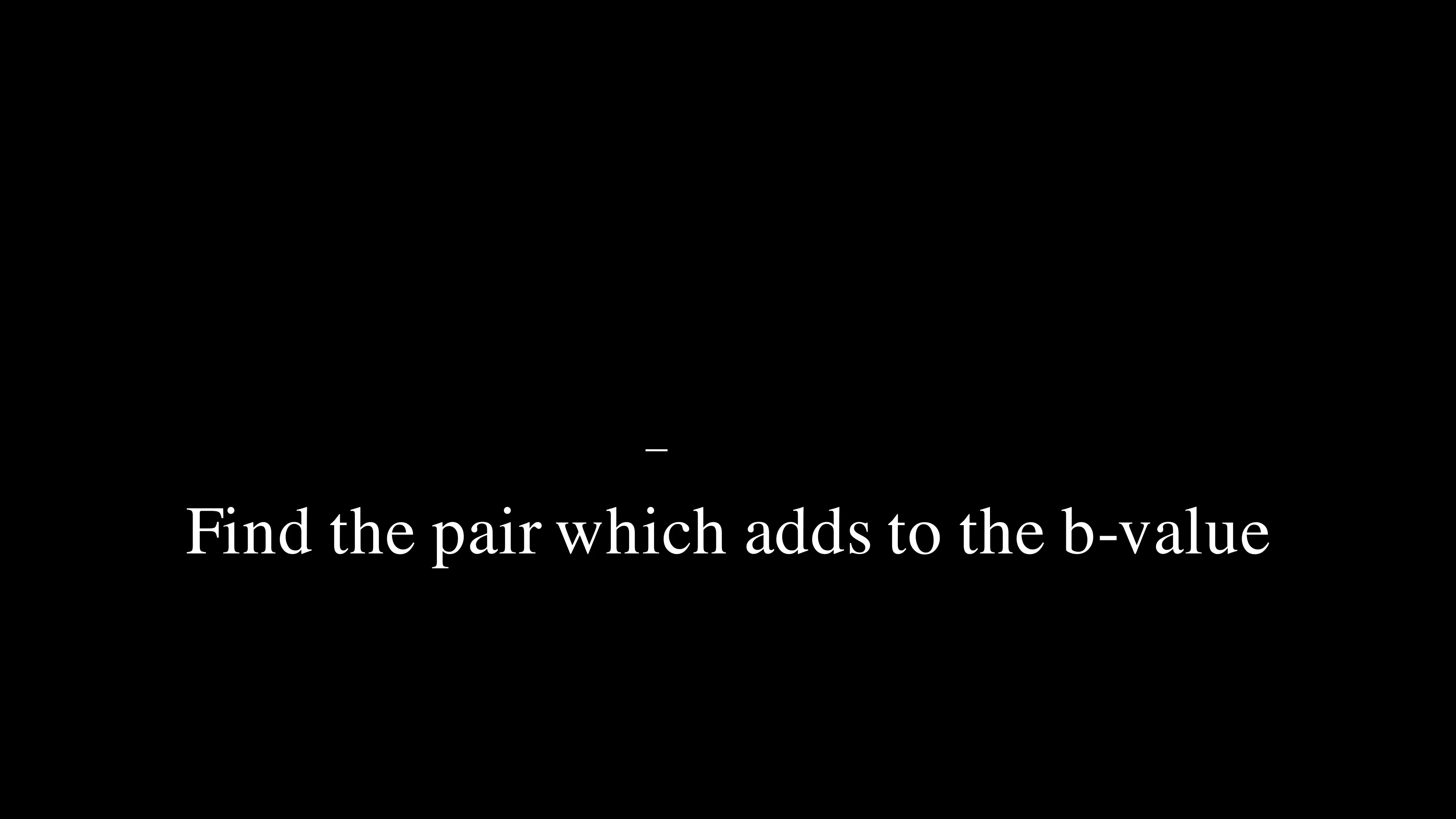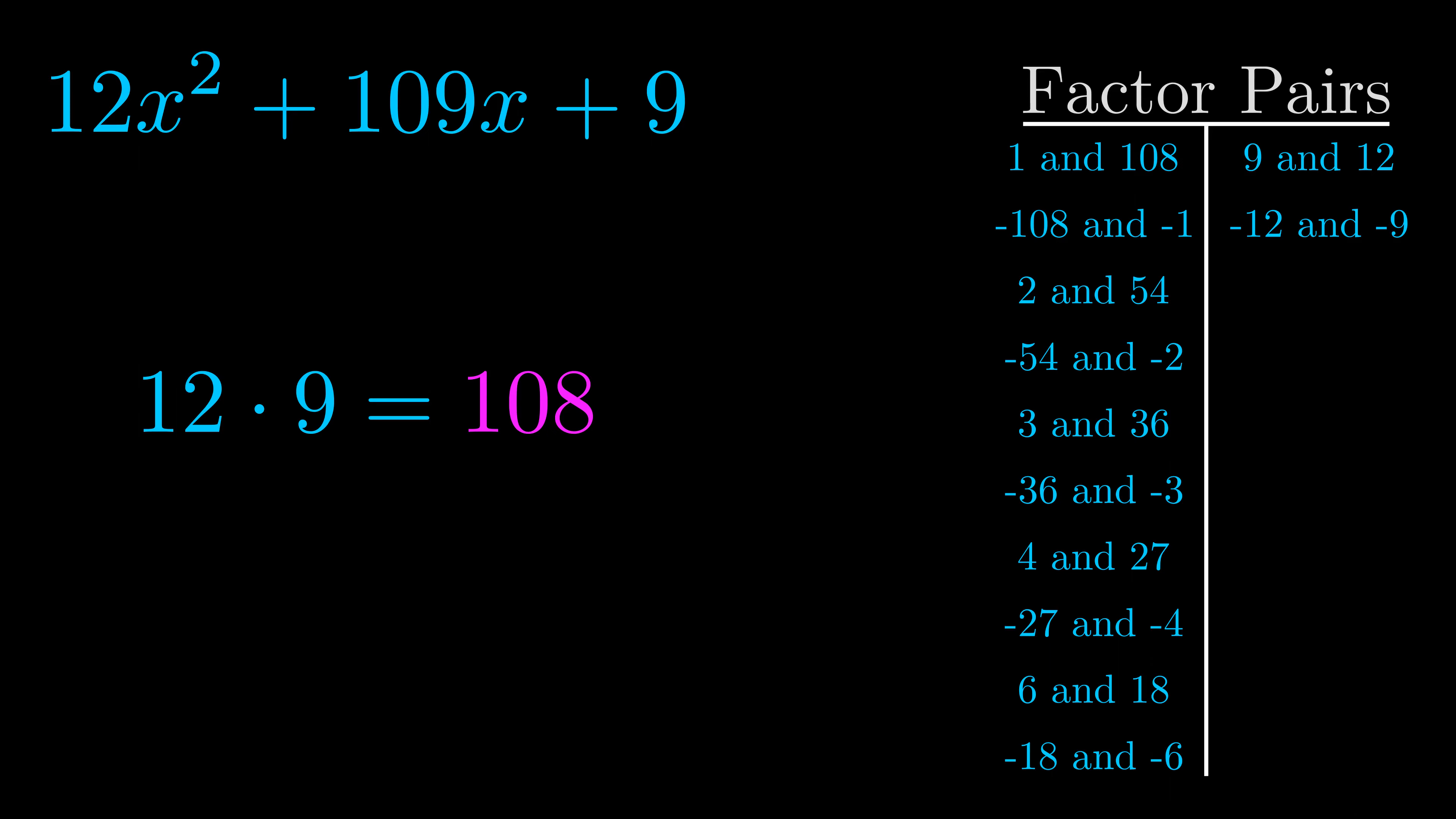The b value is the coefficient on the x term. That's the middle term, the one that we haven't done anything with yet. And really this is the only factor pair that we need.